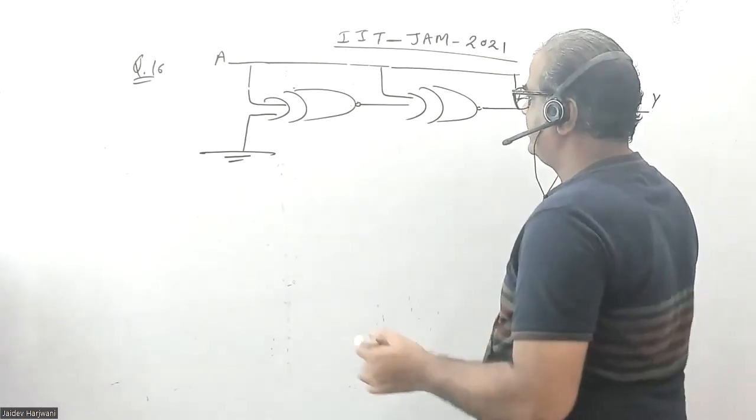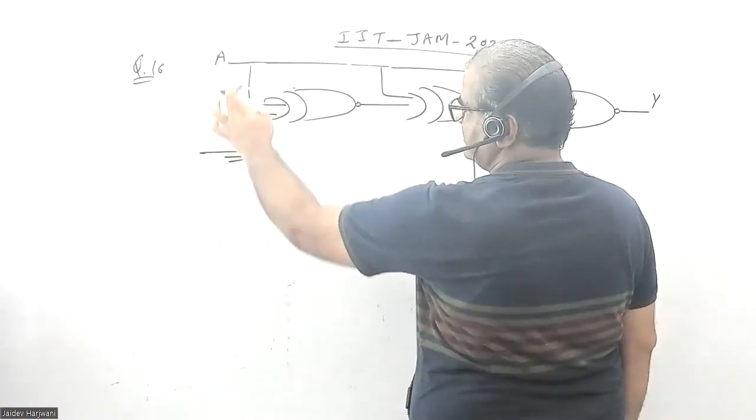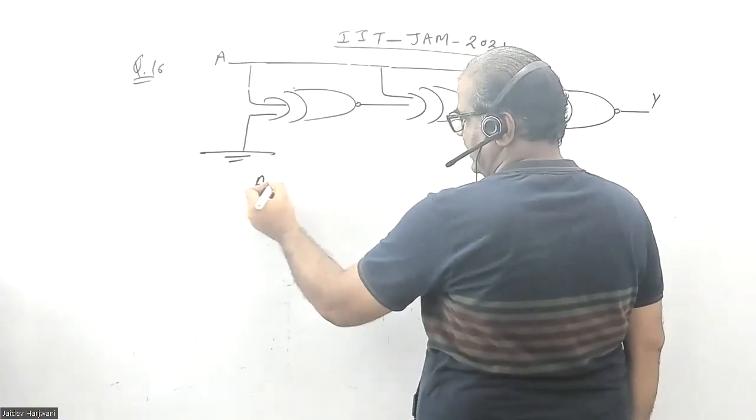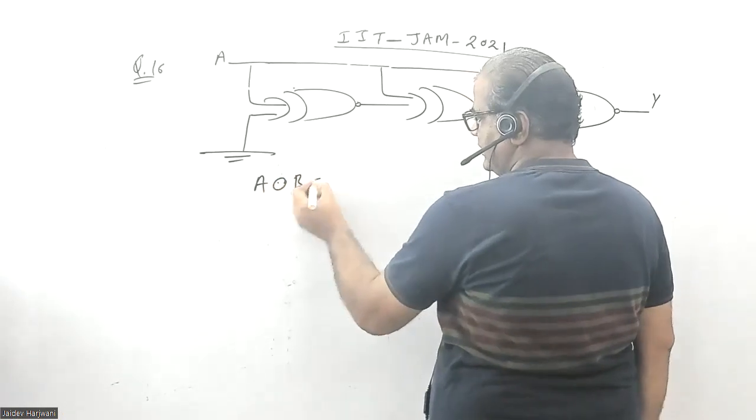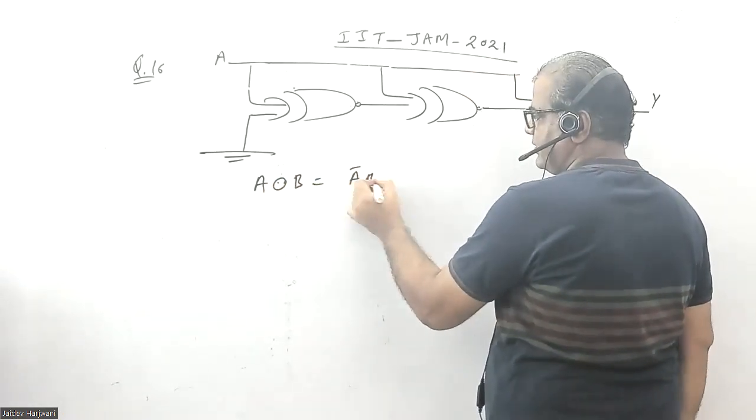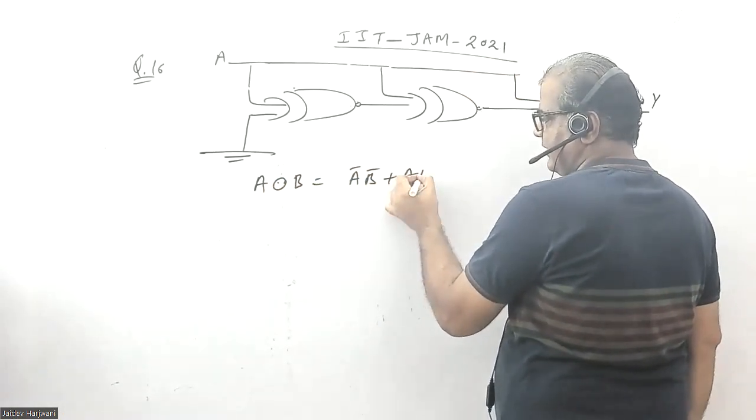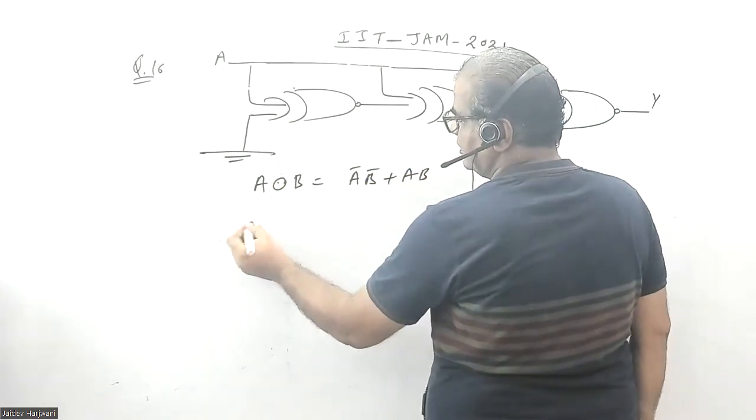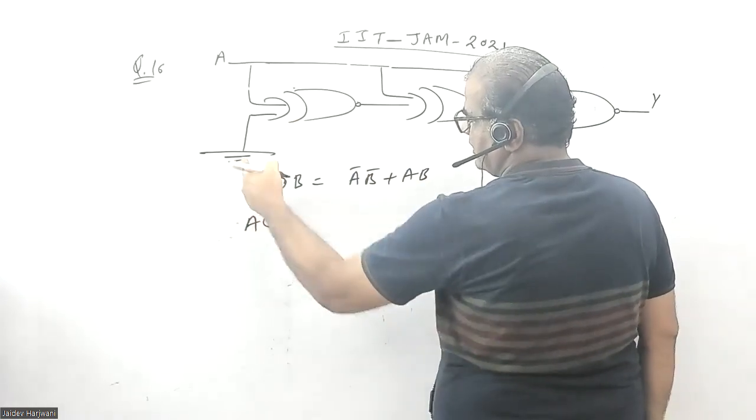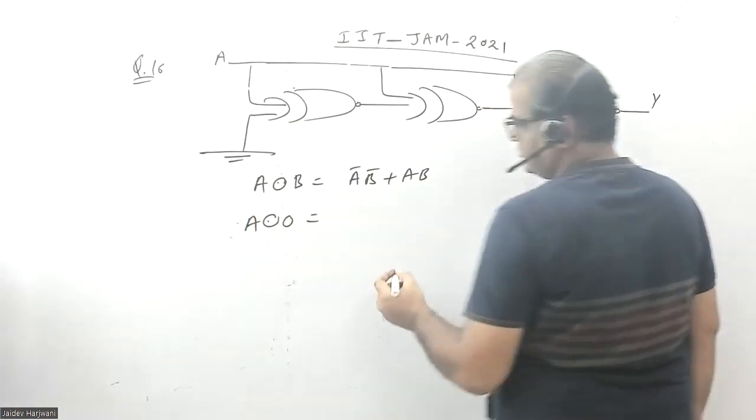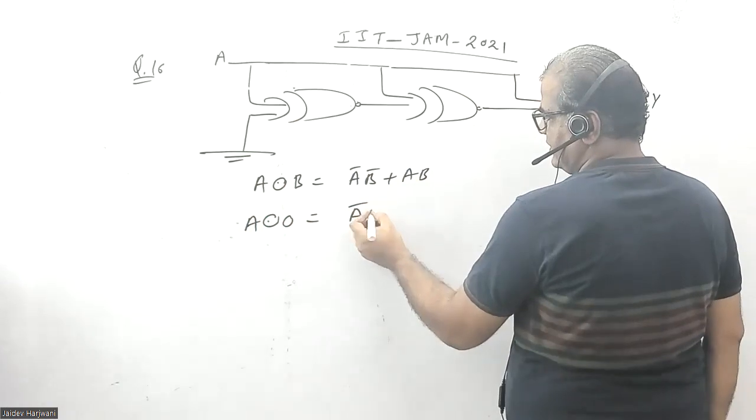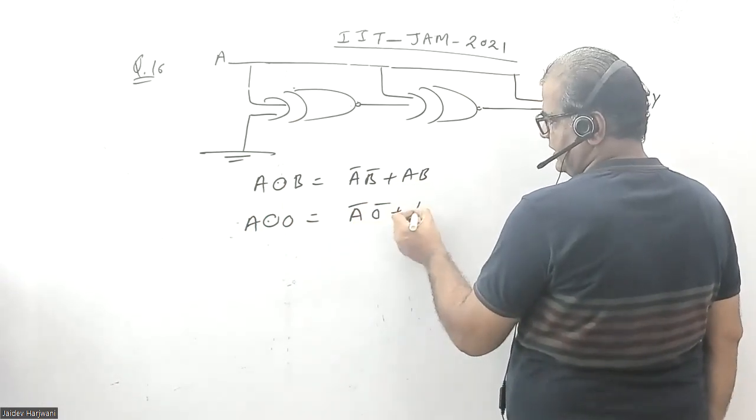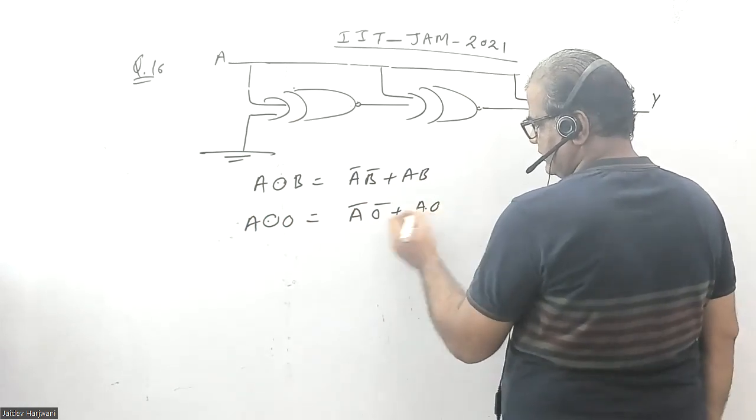Let us find this output. The first XNOR gate has input A and 0. We know that A XNOR B is given by A bar B bar plus AB. So here we have A and 0, so this will be A bar 0 bar plus A times 0.